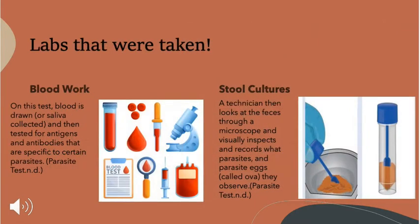The labs that were taken: blood work, in which blood is drawn and then tested for antigens and antibodies that are specific to certain parasites. The stool culture test is when a technician looks at the feces through a microscope and visually inspects and records what parasites and parasite eggs — also called ova — they observed.